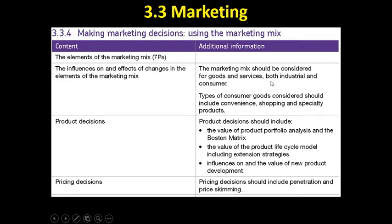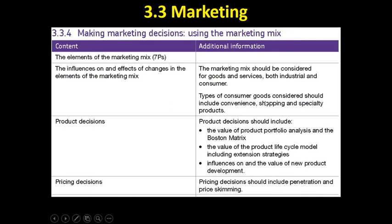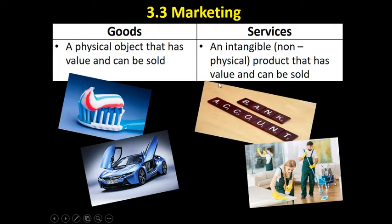The first distinction you need to be aware of is the difference between goods and services. A good is a physical object that has value and can be sold, whereas a service is an intangible product that has value and can be sold. Physical objects are things you can touch — toothbrush, toothpaste, mobile phones, cars — all of these things you can touch.